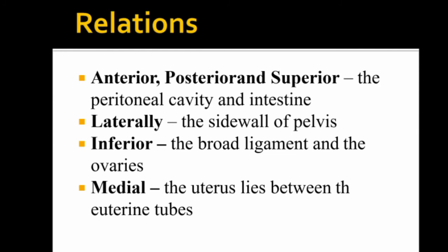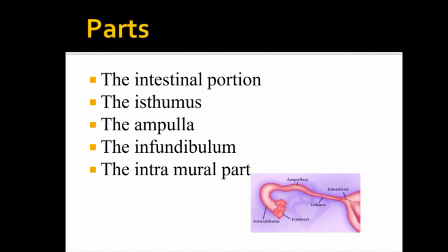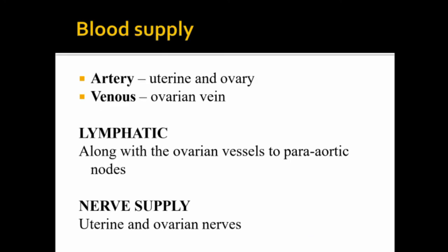The relations of the fallopian tubes include: anteriorly, posteriorly, and superiorly the peritoneal cavity; laterally, the side walls of the pelvis; inferiorly, the broad ligaments and the ovaries. The parts of the uterine tube are the intramural portion, the isthmus, and the ampulla. The blood supply includes the uterine and ovarian arteries, and the uterine and ovarian veins.